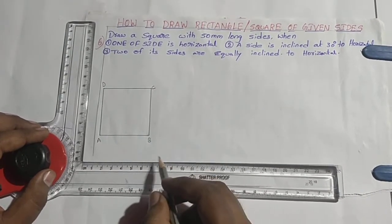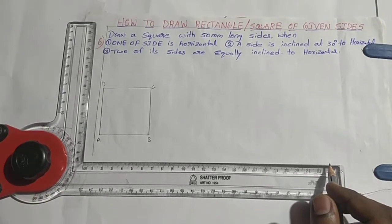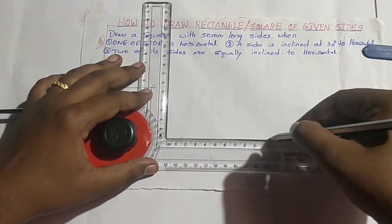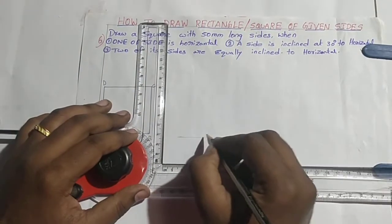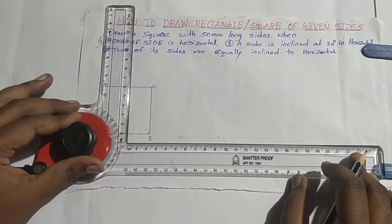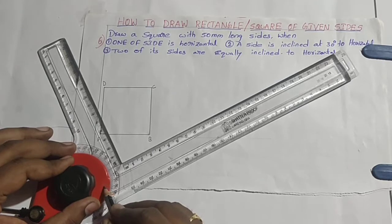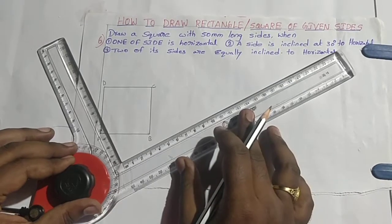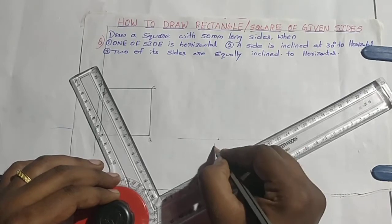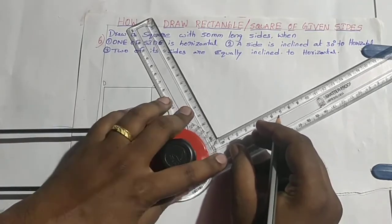Next, the second condition: a side is inclined at 30 degrees to the horizontal line. First I am drawing one horizontal reference line. I am marking a point, then drawing an inclined line making an angle of 30 degrees to the horizontal. For that, I am coinciding the mark on the red surface with the 30 degrees setting. Taking this point as reference — that is point A — I am drawing an inclined line with length 50 mm.